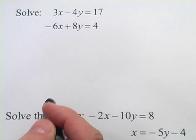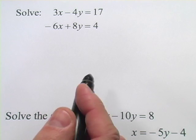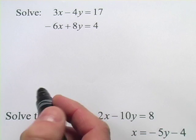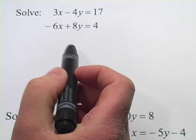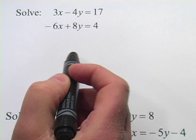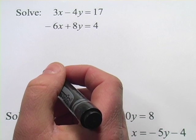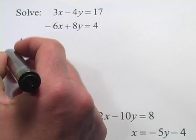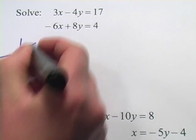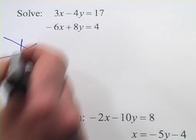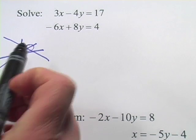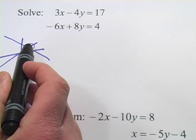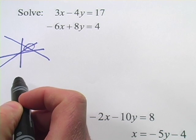In these problems we're dealing with some special cases of systems of equations. You should know that when you solve a system of linear equations, what you're really doing is finding the point where two lines cross. So for example, let's say I have this line right here and this line right here — it's that point right there that is what we call the solution to that system, the x and y value of that point.